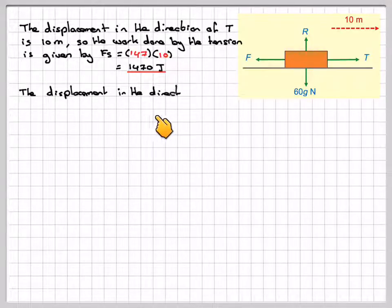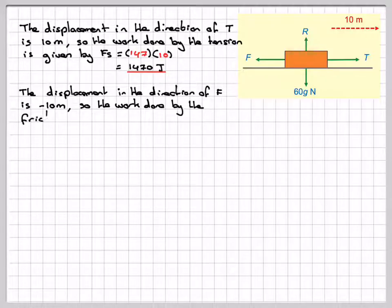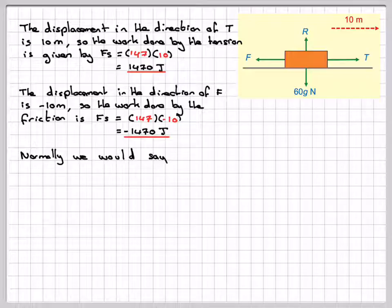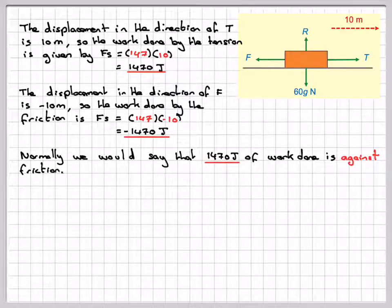The displacement in the direction of F, this way, is going to be minus 10, because it's in the opposite direction, so the work done by the friction is going to be F times S, which is 147 times minus 10, which gives me minus 1470 joules. So normally we would say that the 1470 joules of work done is against the friction.